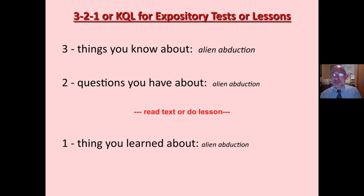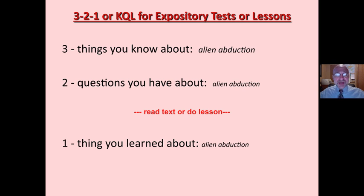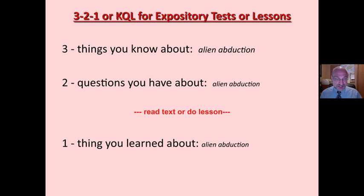Here's a simple activity you can do for expository texts. I call it 3-2-1 — it's similar to KWL. Before reading or lesson: what are three things you know about the topic? In large group you can list those on the board. What are two questions you have about the topic? You read the text or do the lesson. And then what is one thing you learned about afterwards? Students identify something interesting or important. I like 3-2-1 because it provides structure.